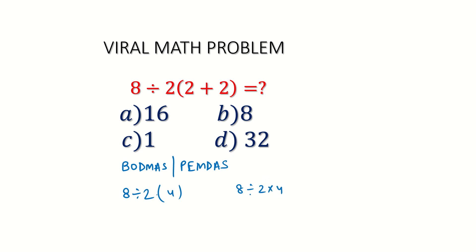Division and multiplication are operators of equal precedence, so we evaluate left to right. Now we can write 8 divided by 2 gives 4, into 4, and 16 is the answer for this problem.